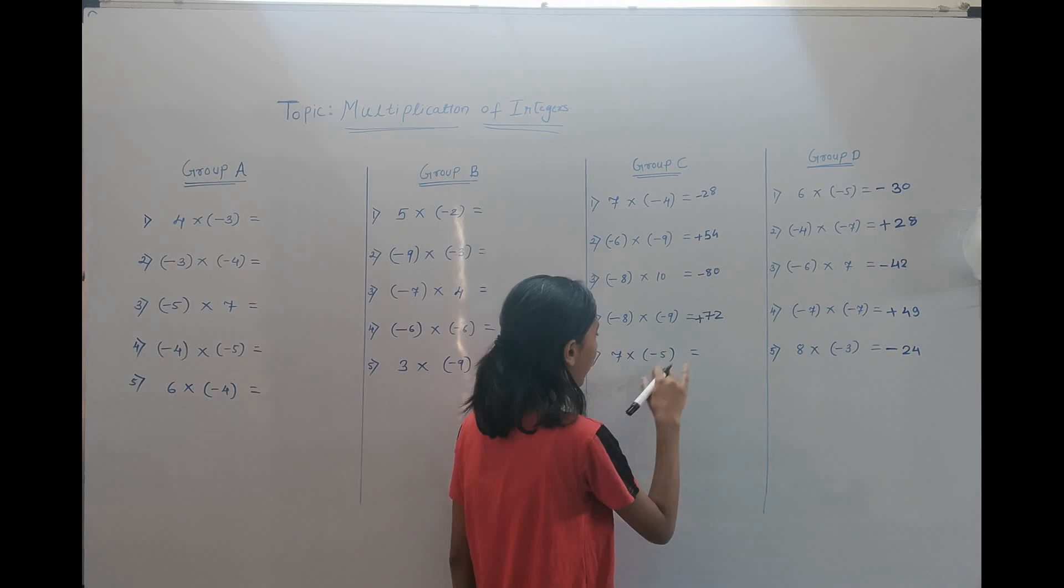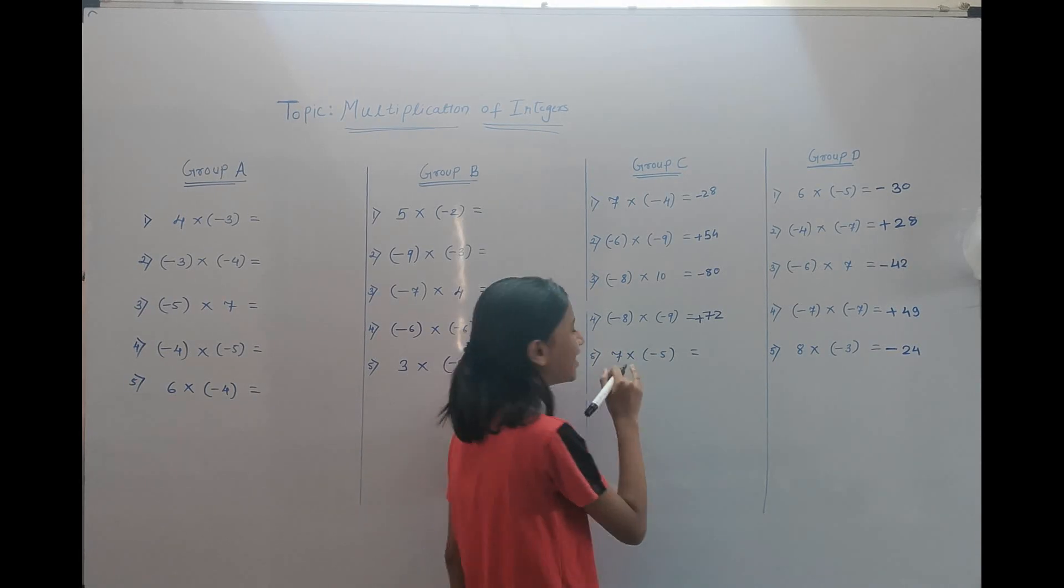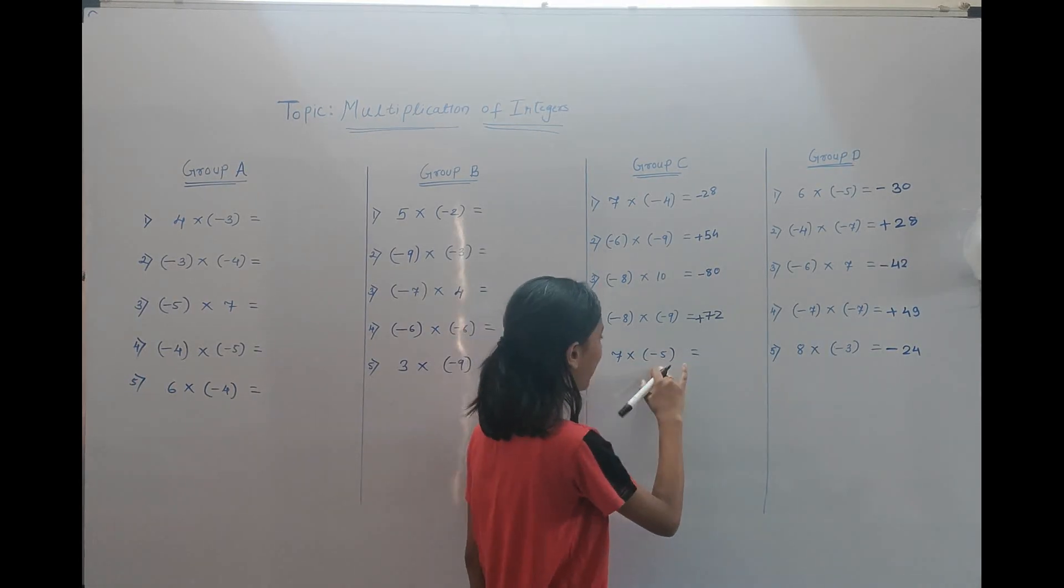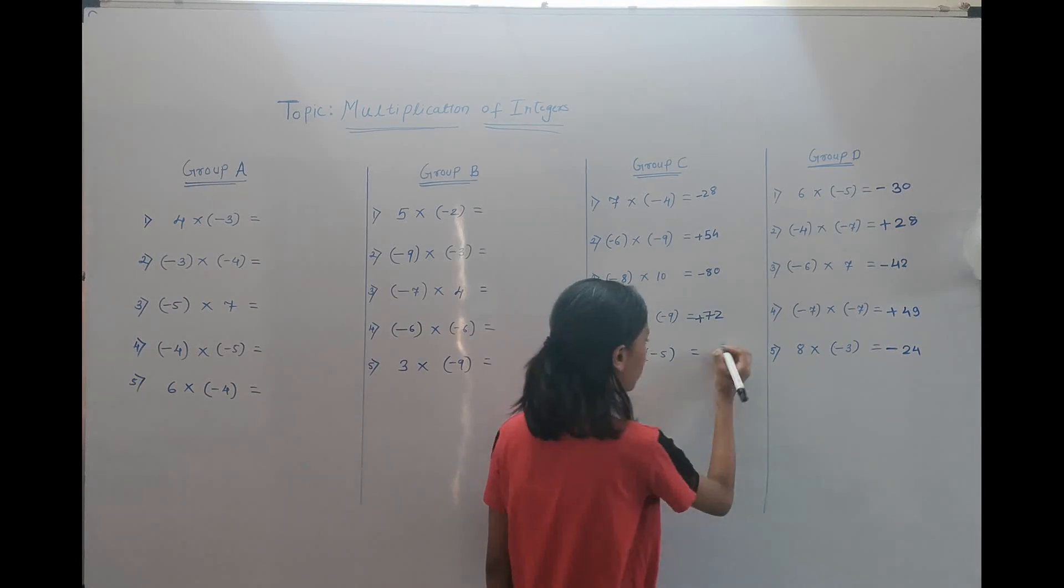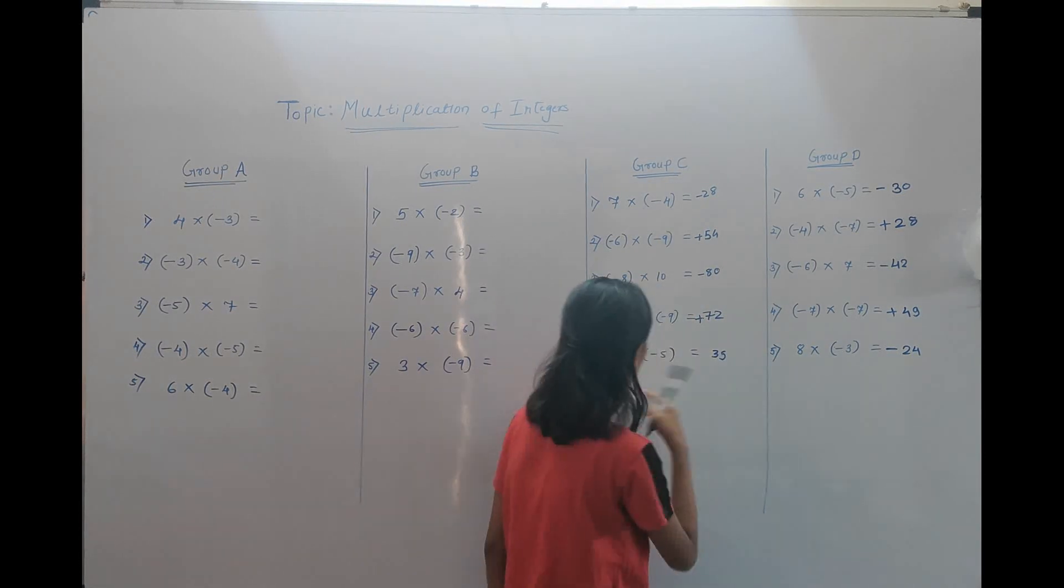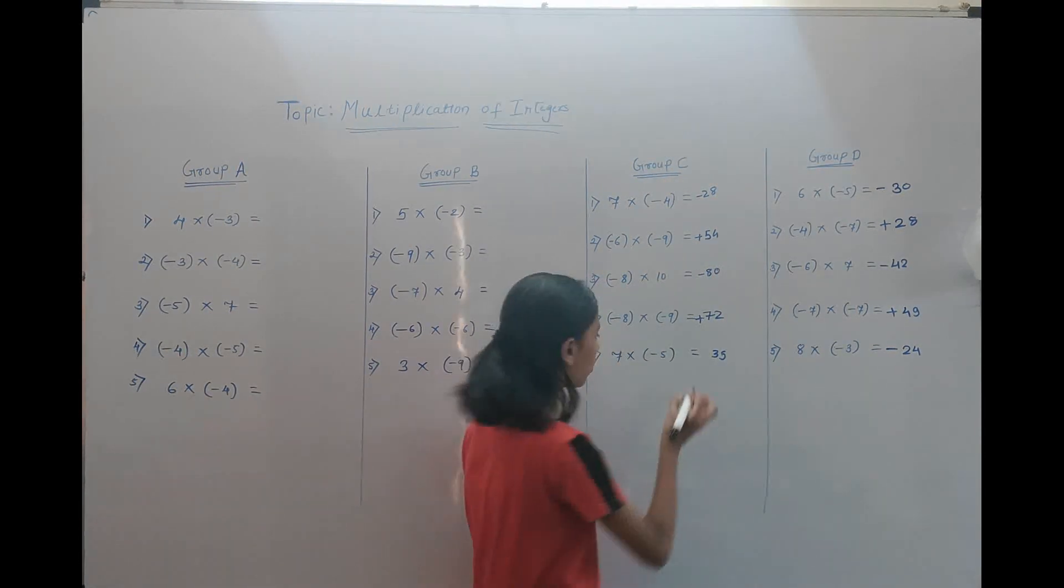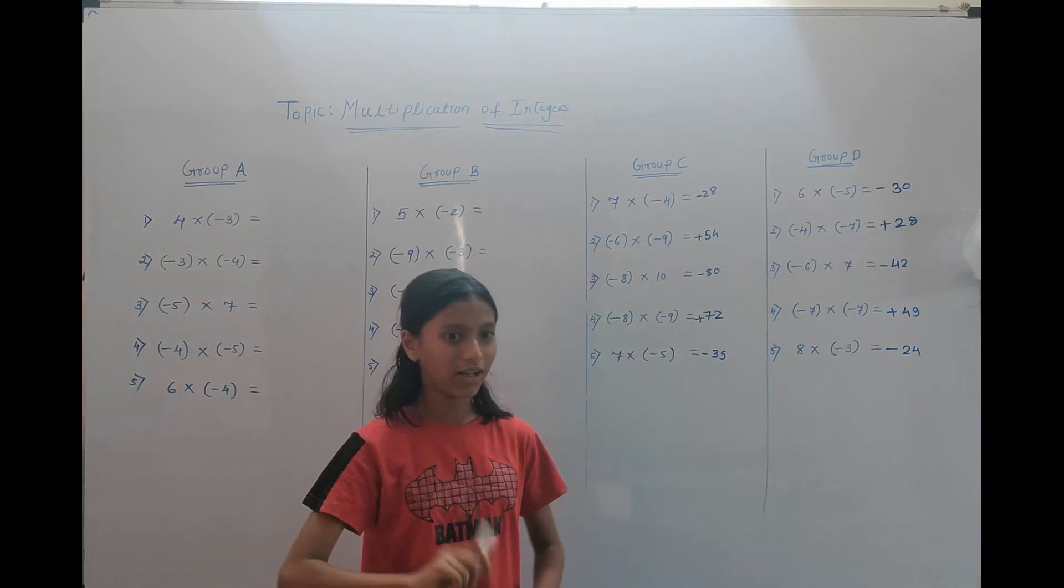Five, five. Sorry, seven multiplied by five. The answer is thirty-five. Both signs are different, so we have to give the sign of minus. Negative.